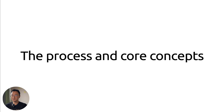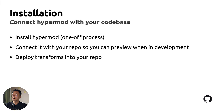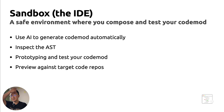The process is actually very simple. You need to install Hypermode into your codebase. Hypermode has a GitHub application, so you just authorize Hypermode to access your repo so it can create the GitHub Actions workflow. It's a one-off process — you install Hypermode into your repo. Then you connect your repo with Hypermode so you can preview the changes when you compose a codemod in Hypermode and see how it looks applied to your repo. You may need to tweak some things, but that's essentially step one.